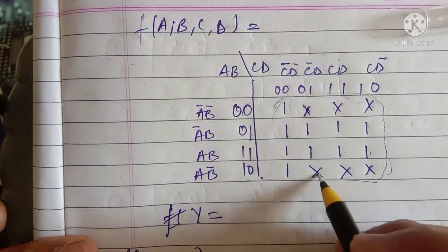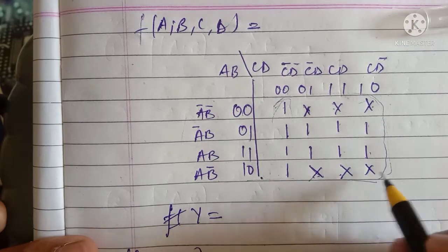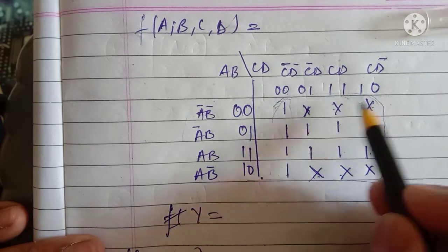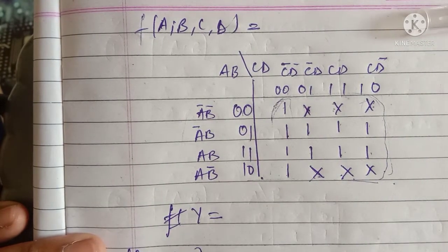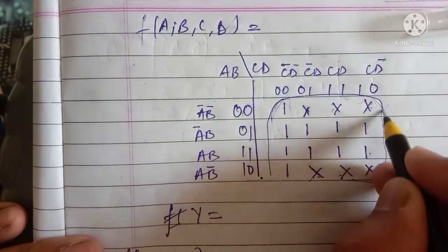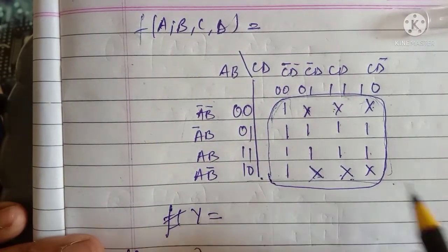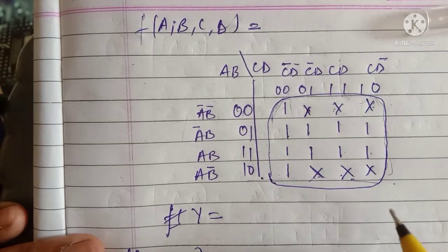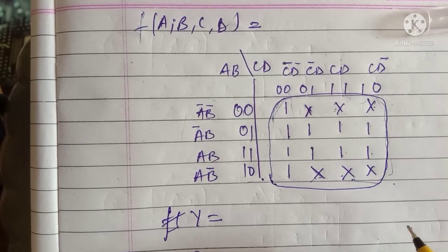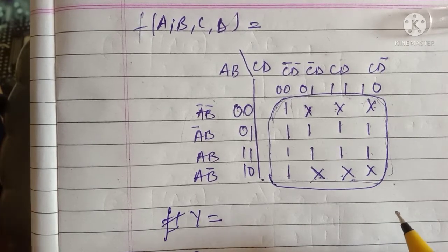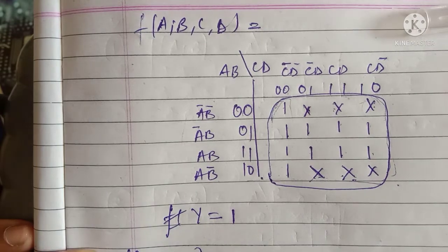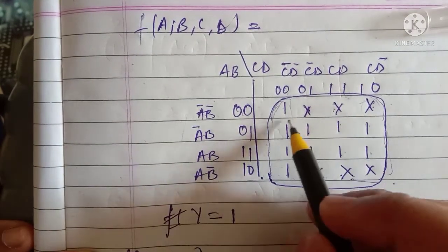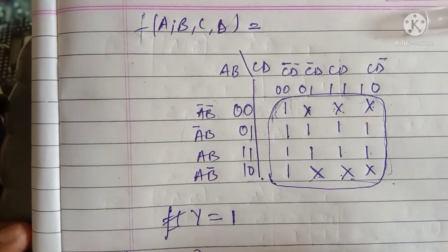If I want to make a pair of 16, this X will act as a useful bit for us. Suppose a zero is there — you can't use it — but here all ones and X's are there, so this X will be useful to form a pair of 16. I will form this group using these X bits. A don't-care bit can be useful when forming a group, or sometimes it won't be used. Forming this whole 16-bit group means the answer will be one only.